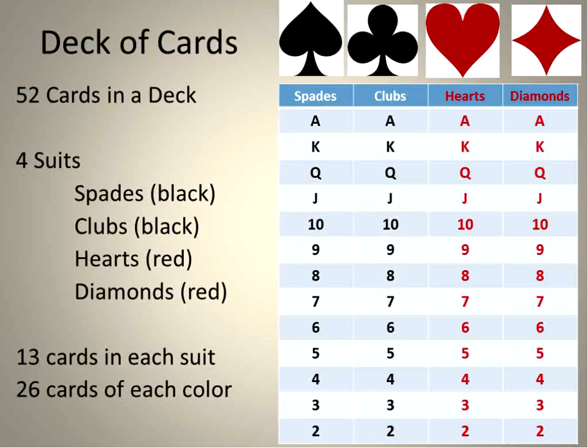And the most complicated questions come from a deck of cards. So a deck of cards, I tried to lay it out here for you. If you're familiar with a deck of cards, you can skip forward a little bit. But it'll have 52 cards in the deck. There are four suits: spades, which are represented by this, they're black. Clubs are also black. Hearts are red. And diamonds are red.